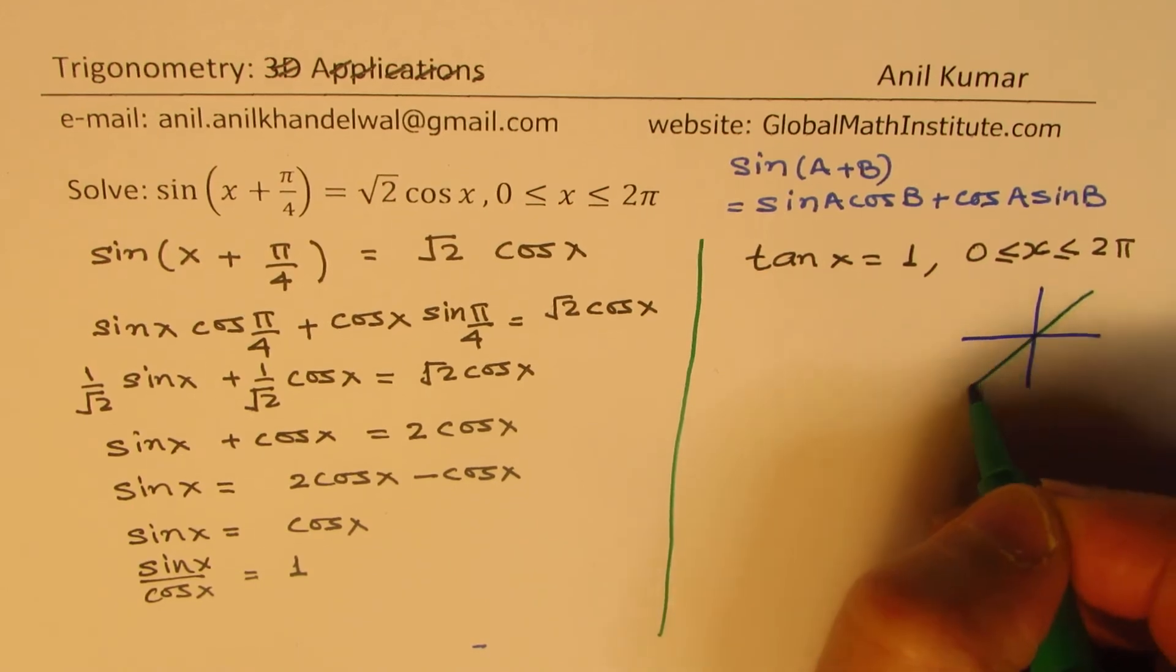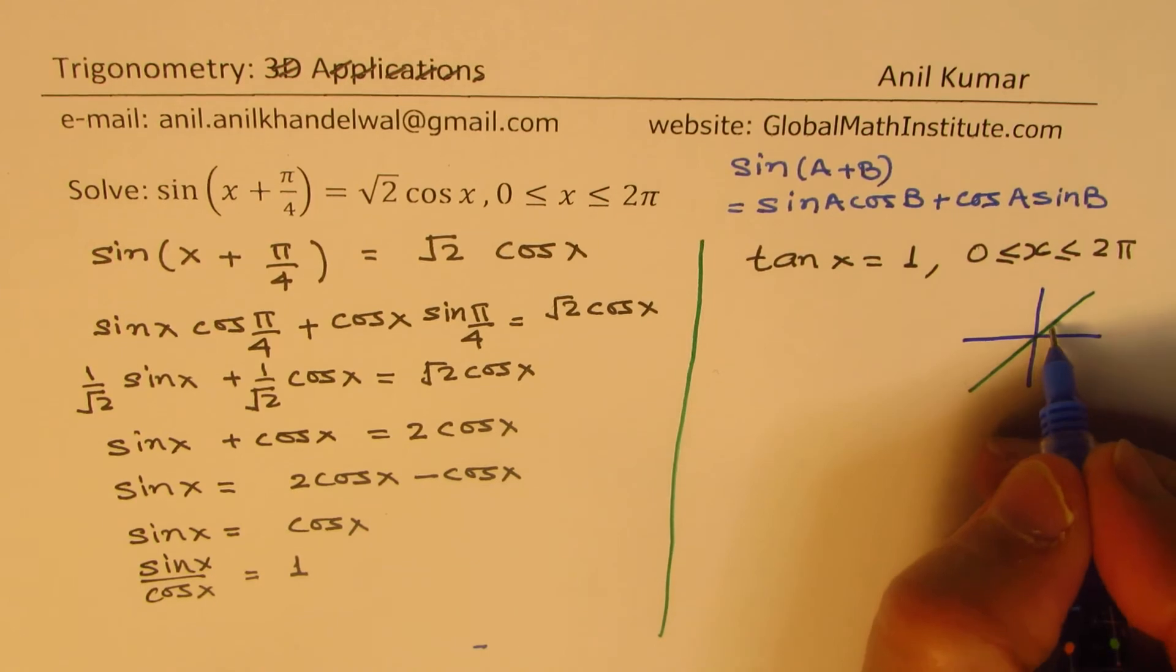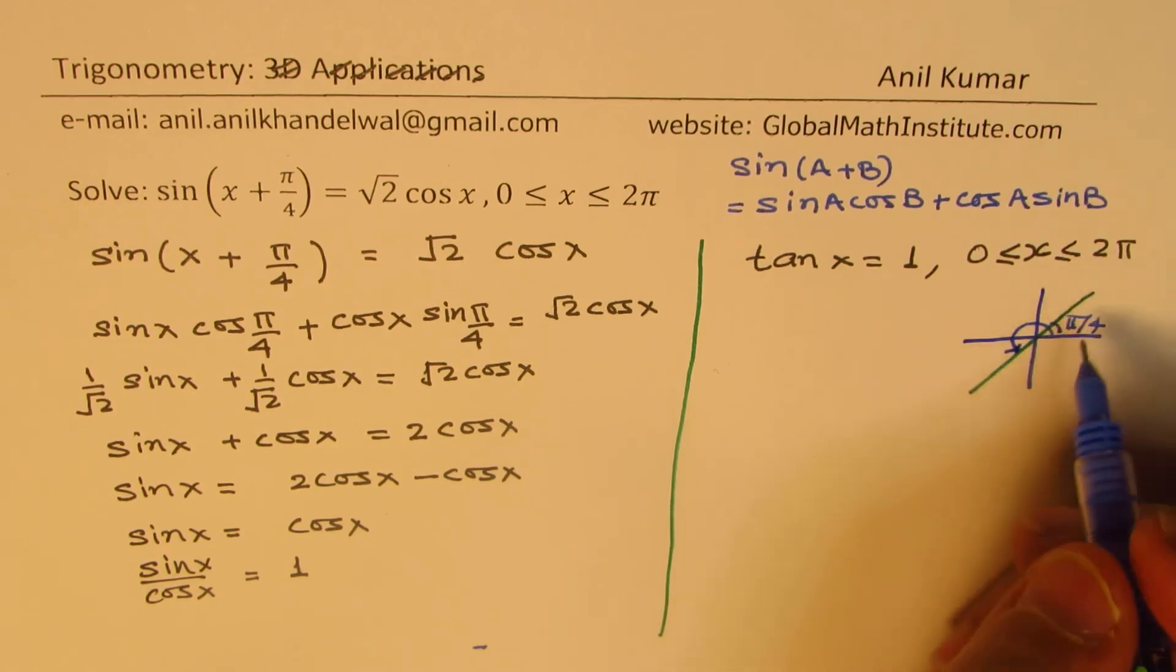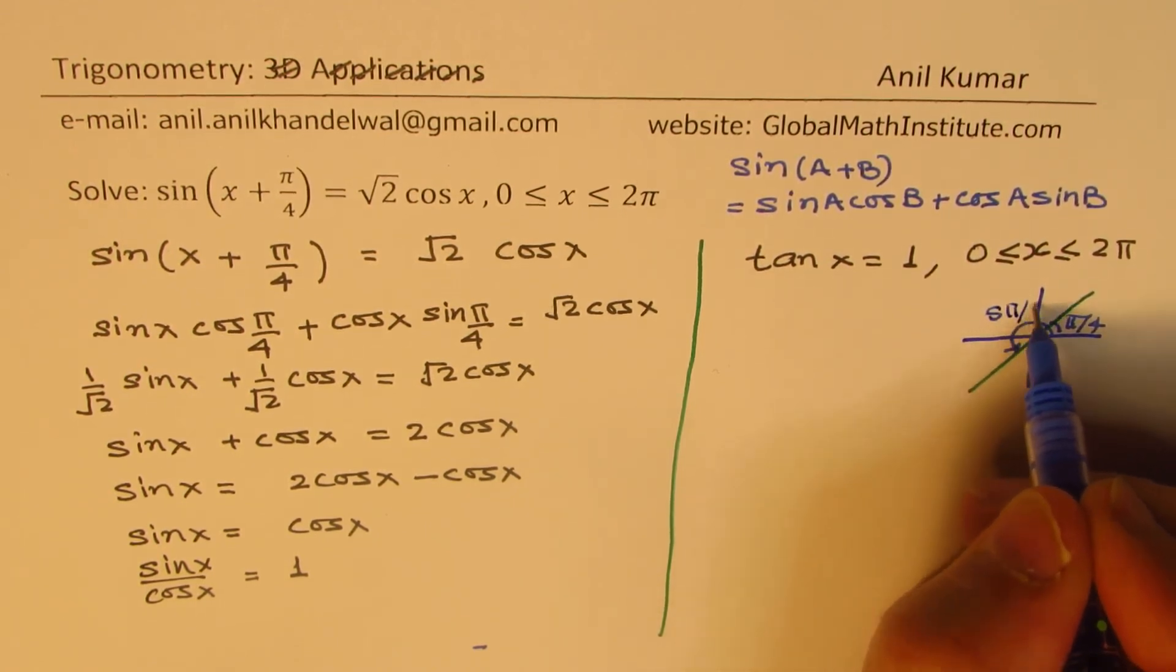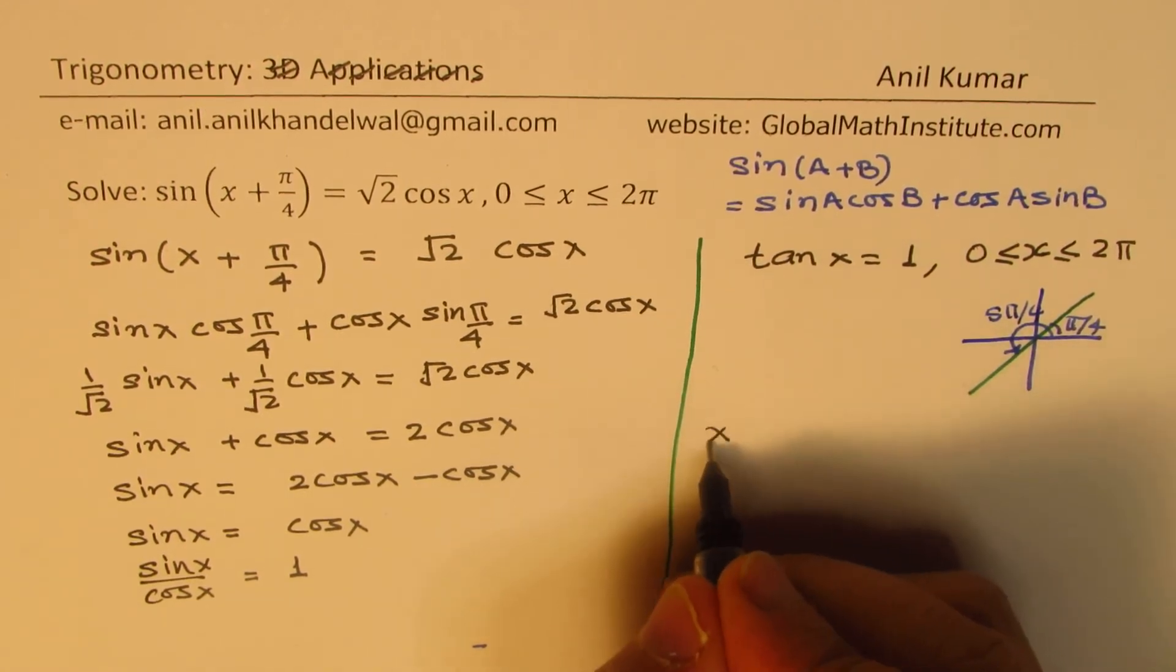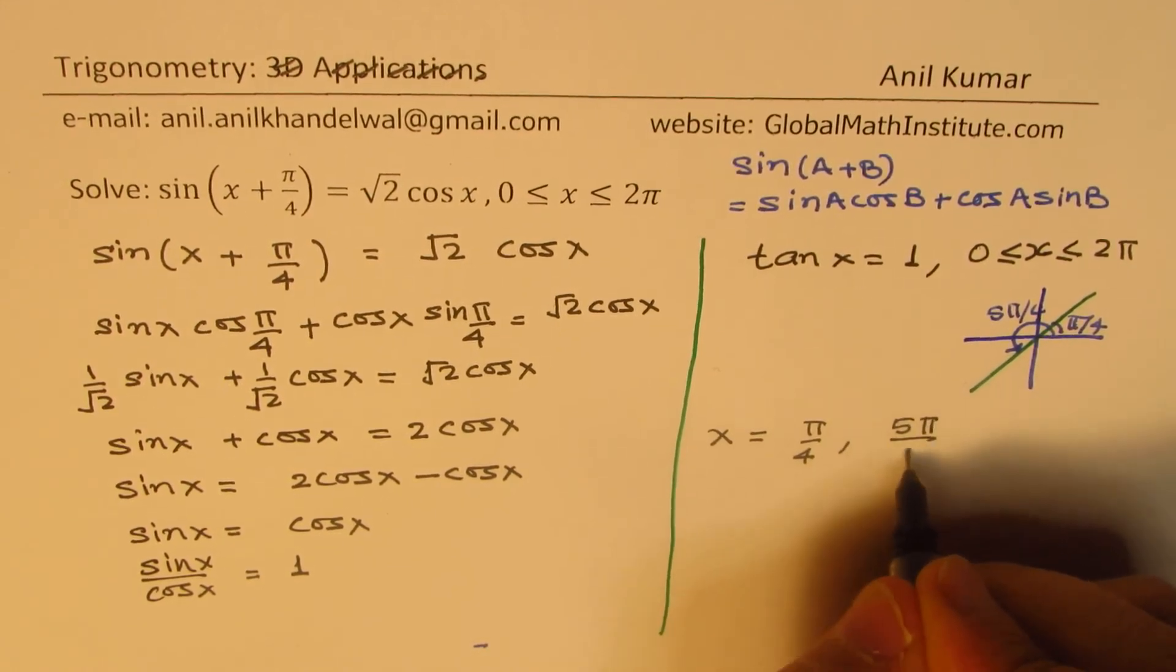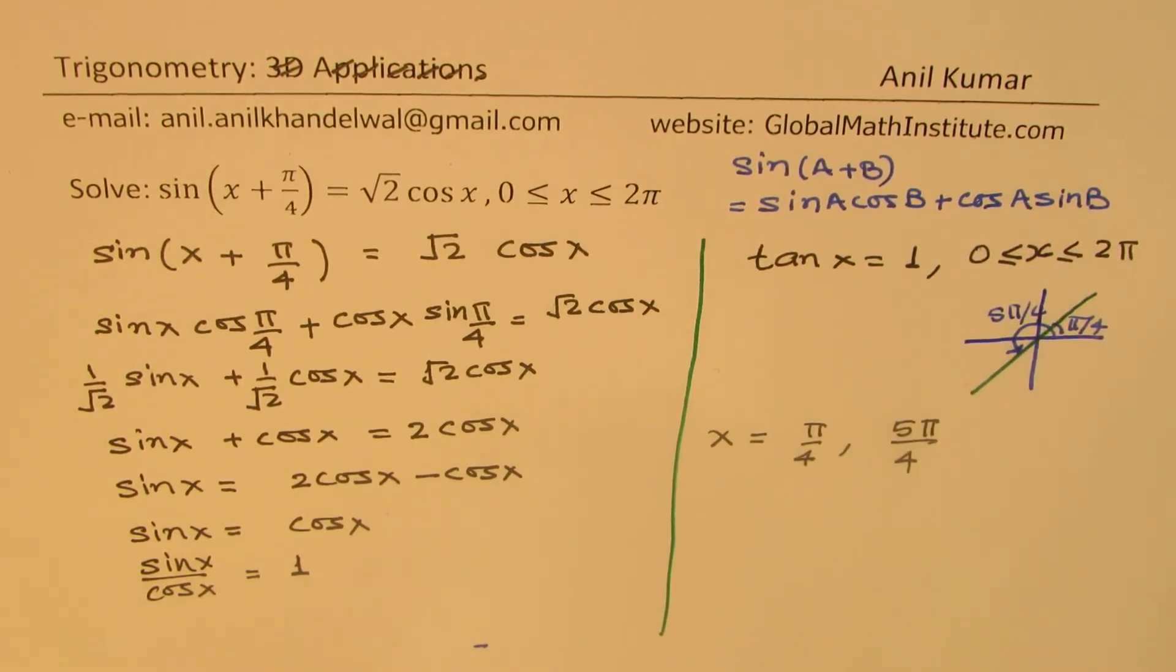The first angle is π/4, the acute angle, and the other angle is 5π/4. So we can write down that the answer is x = π/4 and x = 5π/4 in the given interval from 0 to 2π.